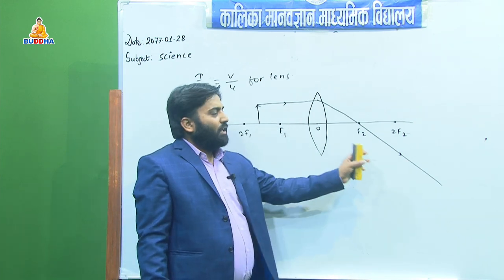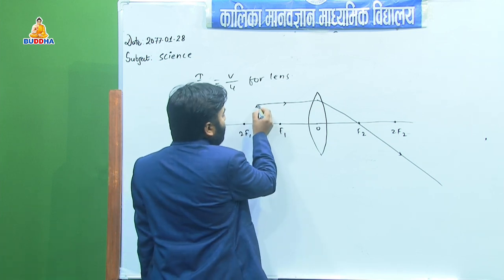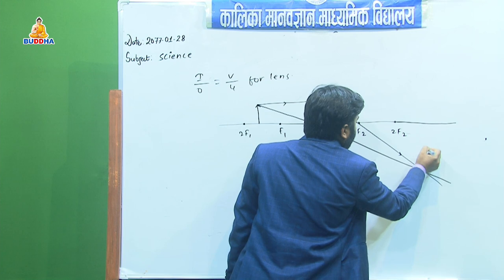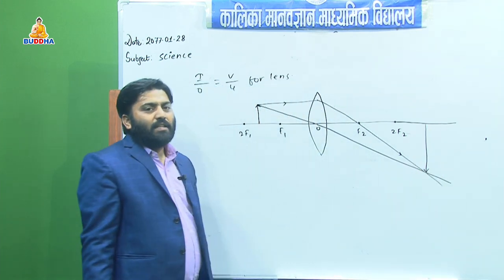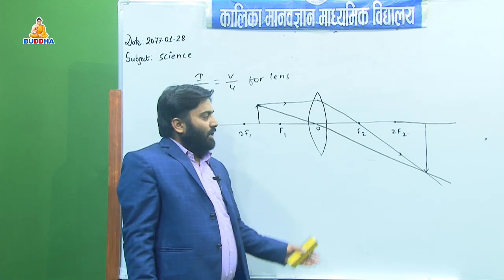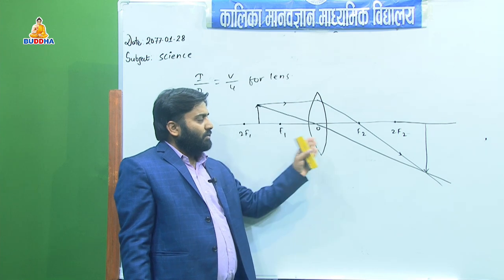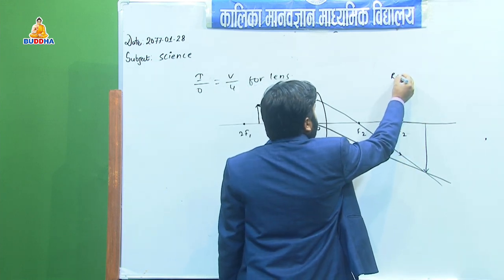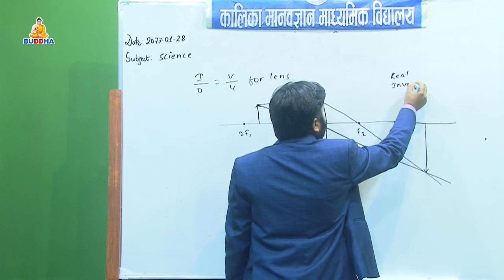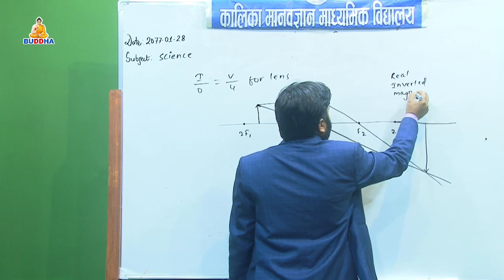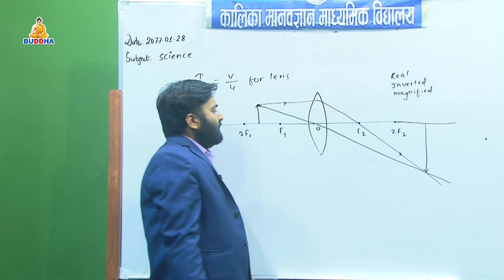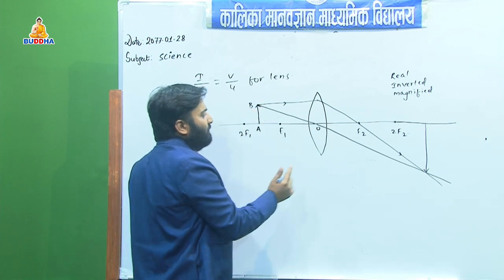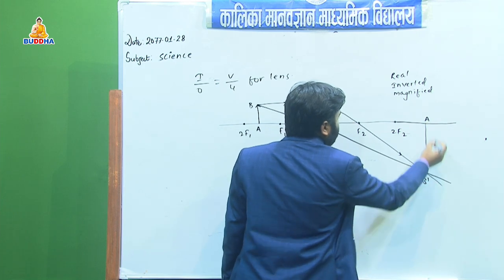Another ray passes through the optical centre and goes straight without bending. These two rays meet on the other side of the lens, forming the image. The image is real, inverted, and magnified — real because it is formed on the opposite side of the lens, inverted because the head and tail of the object are reversed, and magnified because the image is larger than the object.